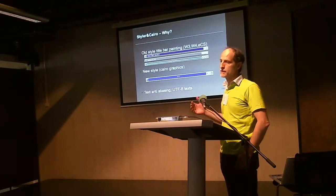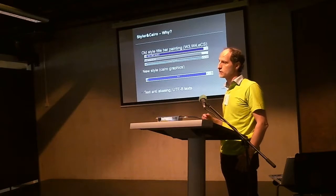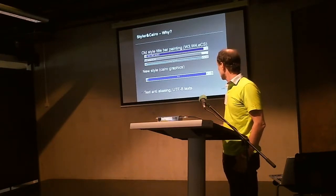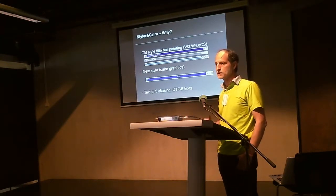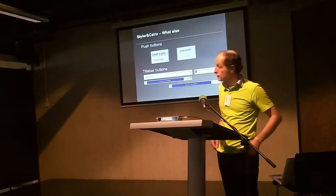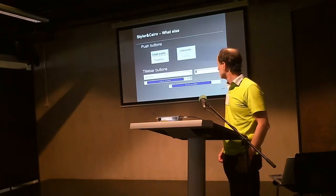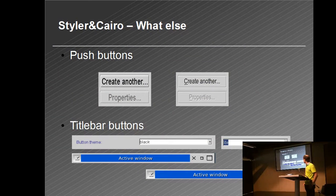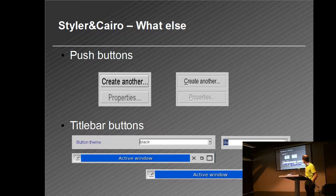This was the first thing I did on Styler — getting the title bars with a better look. Then I started looking at the code and tried to do something more. After working on title bars, I worked on push buttons. On the left you see a standard push button, and on the right there is one with anti-aliasing. The text is looking much better — I think you can see from the front.